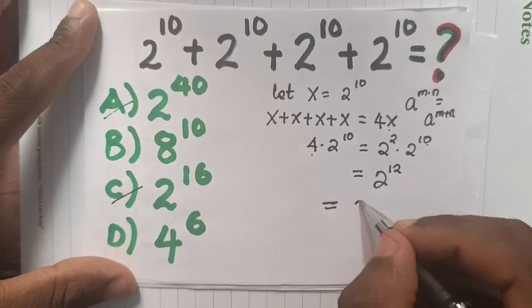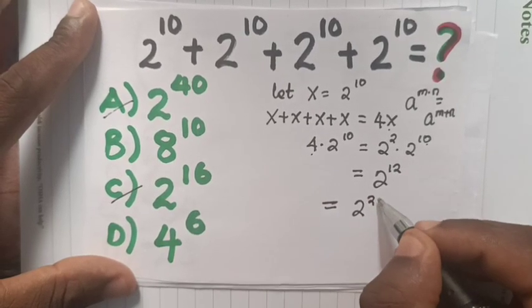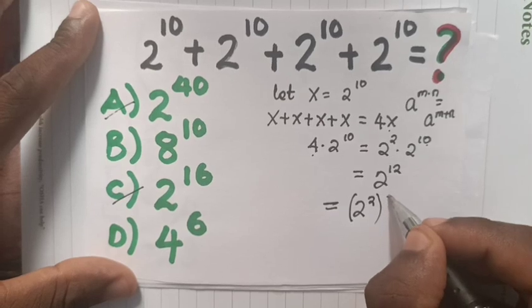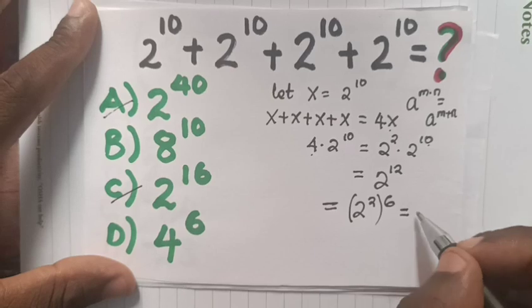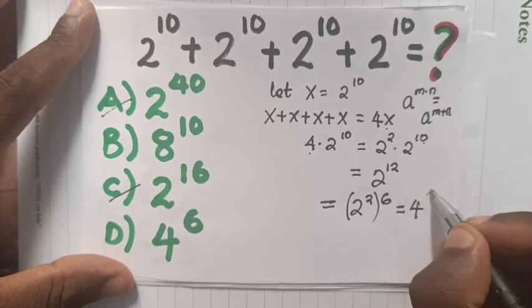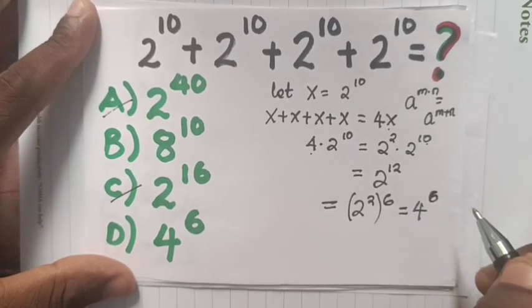We convert 2 power 12 to 2 power 2 times 6, since 2 times 6 is 12. Then, 2 power 2 is 4, so it will be 4 power 6.